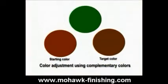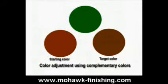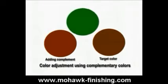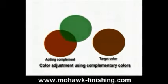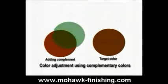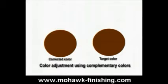Let's take an example. The mixed color is redder than the target color. In order to make the mixed color less red, or in other words to neutralize some of the red, we'll add the complementary color of red, which is green, or one could say blue and yellow. Notice that the red was diminished by the green and that the colors now match.